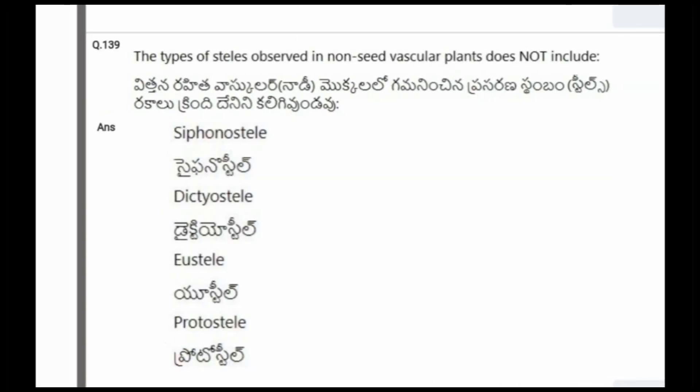Next question: The types of steles observed in non-seed vascular plants does not include? The options are siphonostele, dictyostele, eustele, protostele. The correct option is the third one, eustele.